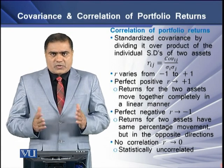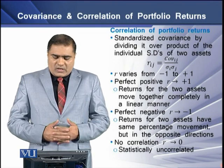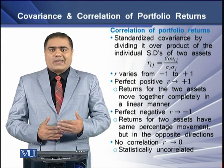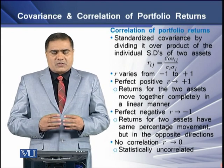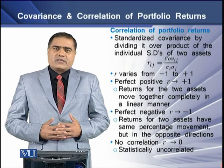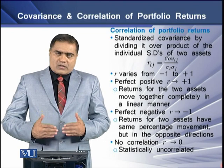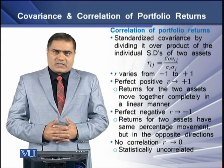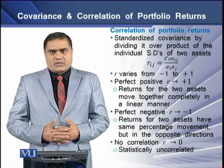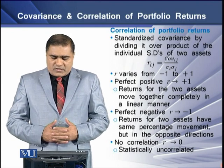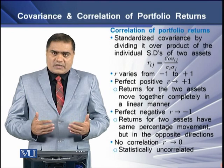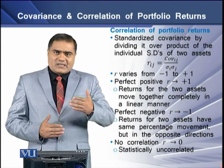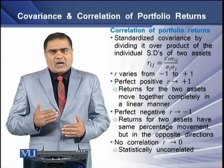If the correlation is positive 1, this means a perfect positive correlation, where the returns for the two assets move together completely in a linear manner — if the returns of asset I are increasing, the returns of asset J will also be increasing. If the value of R is negative 1, we have a perfect negative correlation, meaning the returns of two assets have the same percentage movement but in opposite directions.